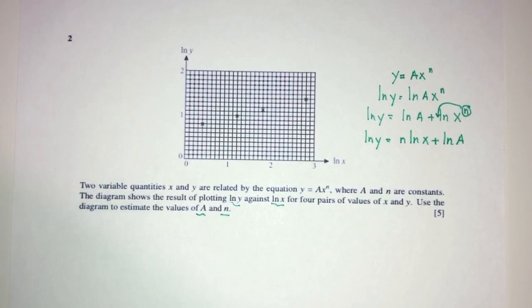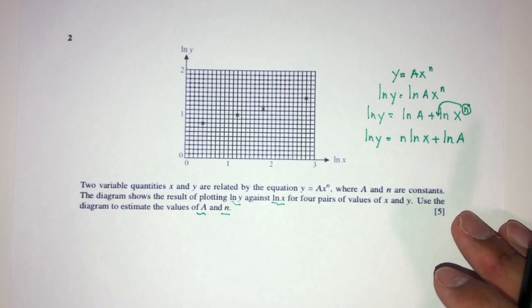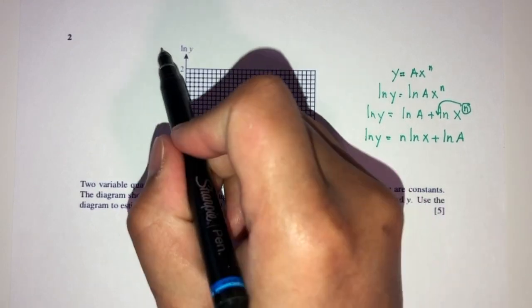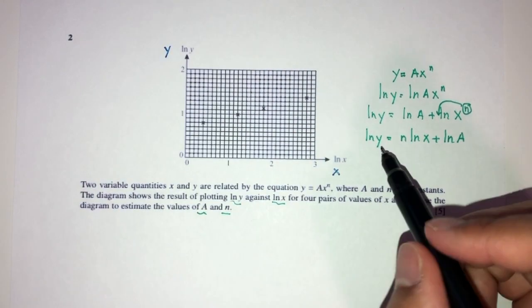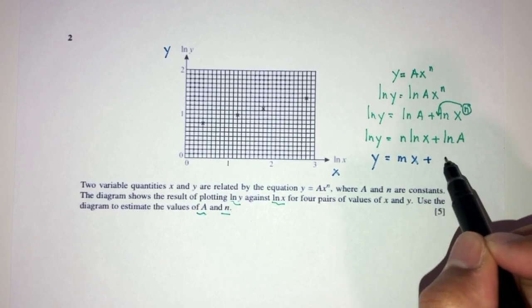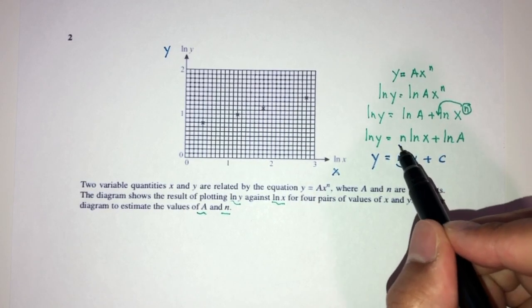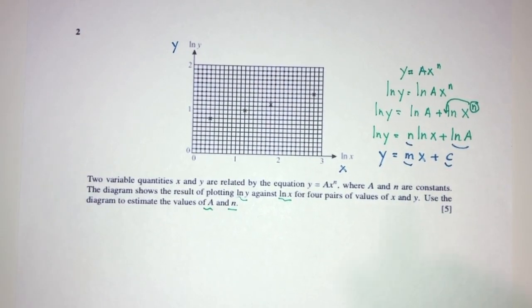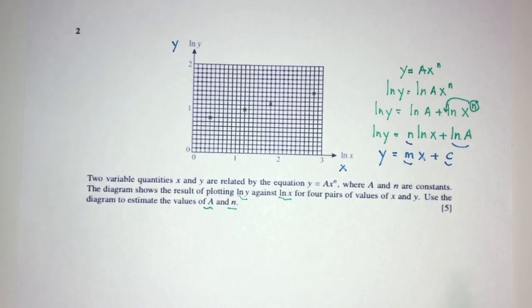Now, you can see this resembles the equation of a straight line. If you recall, usually we have X here and Y here as your variable. And this is basically Y equal to MX plus C. This is the gradient, and this is the Y intercept. So using that knowledge, let's try to estimate those values according to your graph.